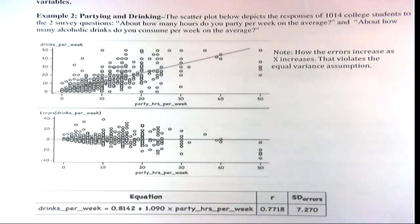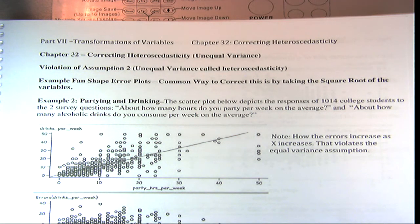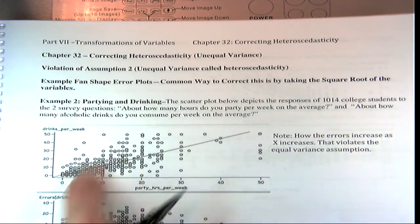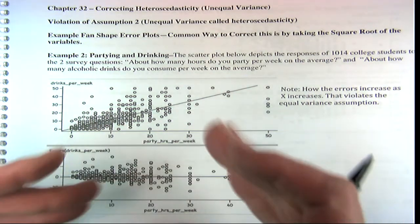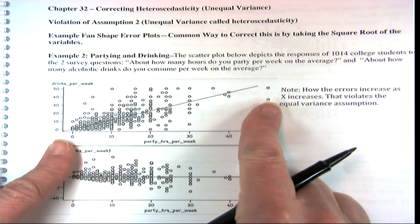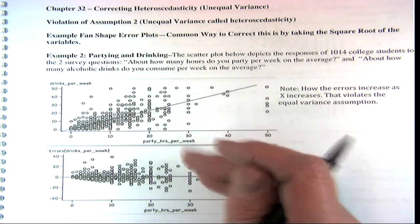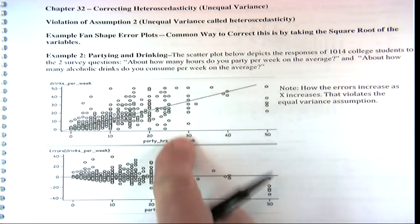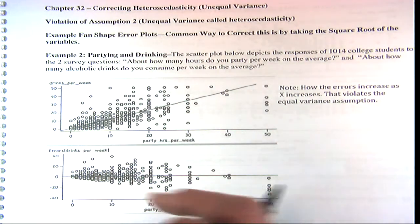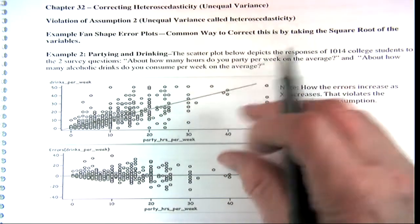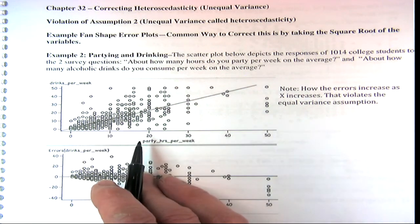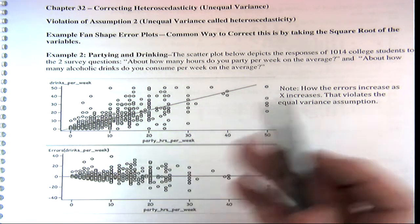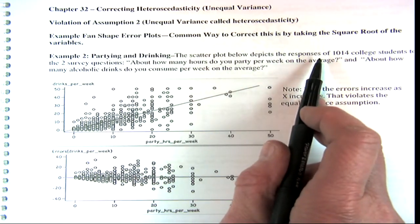Step two is super easy — we want a confidence interval not for square root but for drinks. We're symmetrical around our estimate 5.2 for the square root, but we're going to get an asymmetrical confidence interval for drinks. So the 95% confidence interval for drinks is 3.08 squared to 7.32 squared, which equals about 9.5 to 53.6. Note the confidence interval is asymmetrical for drinks but symmetrical for square root of drinks — it's not symmetrical around 27.